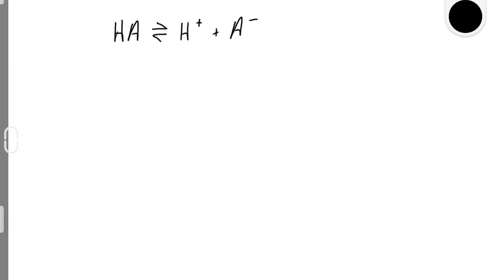If we look at the generic weak acid equilibrium, HA dissociating to give you H+ ions and A- ions, you can see that we have a conjugate acid and a conjugate base.